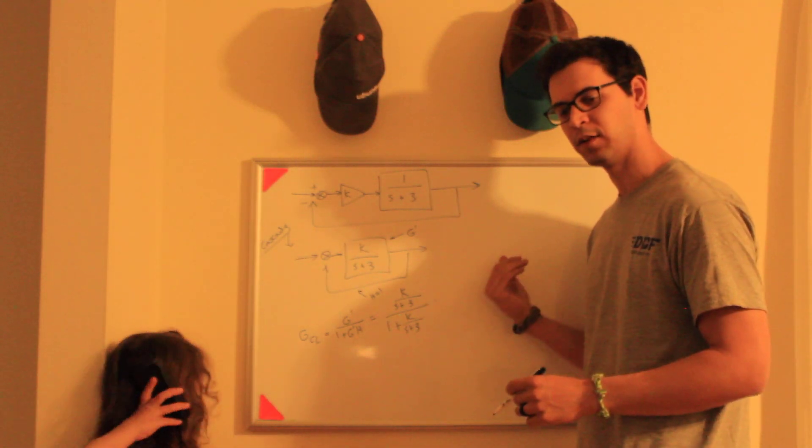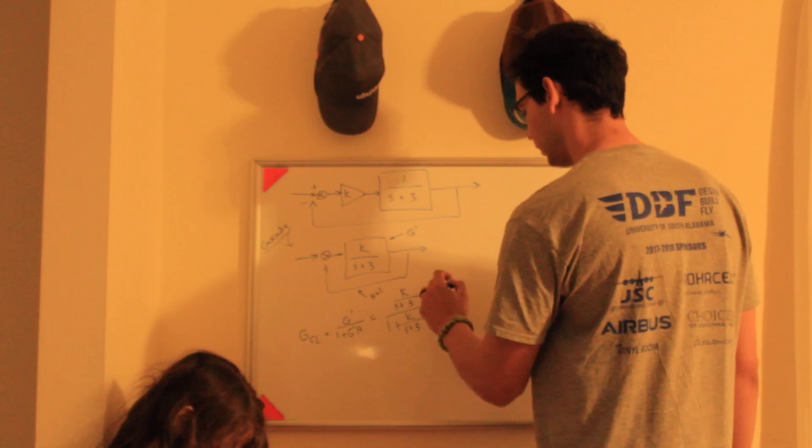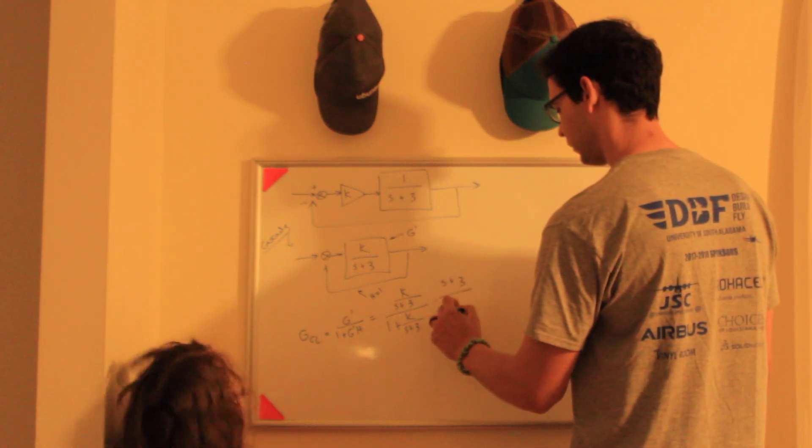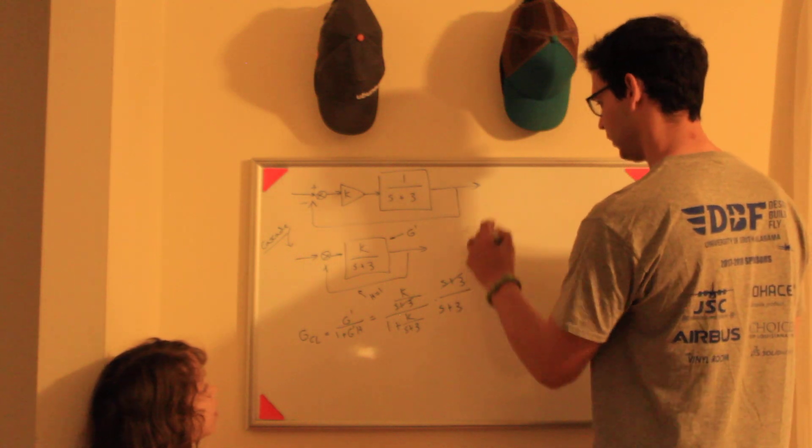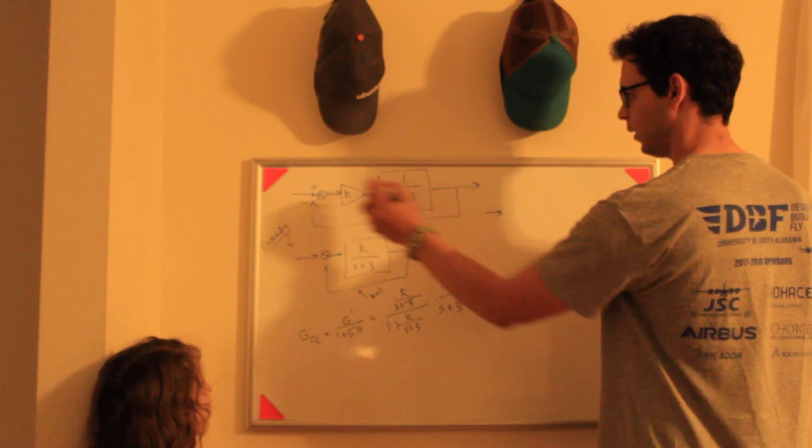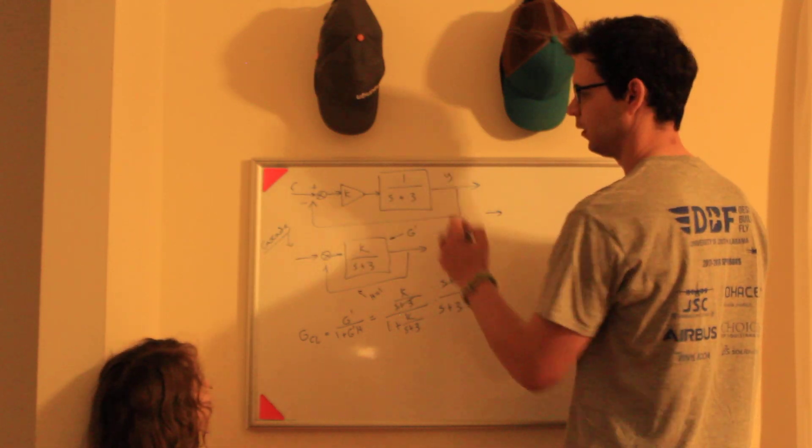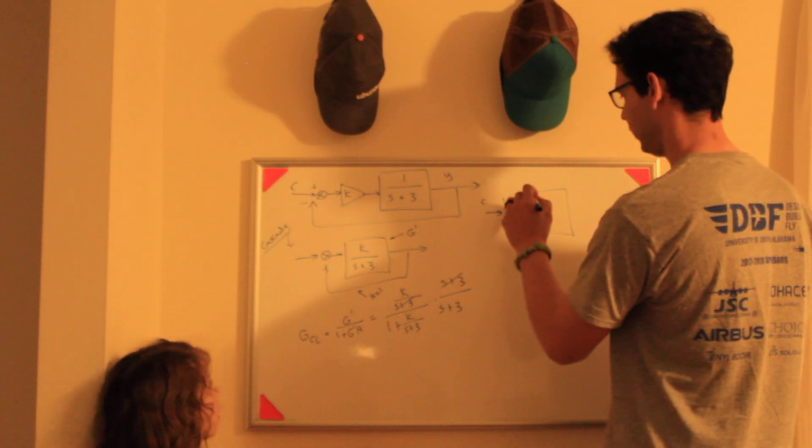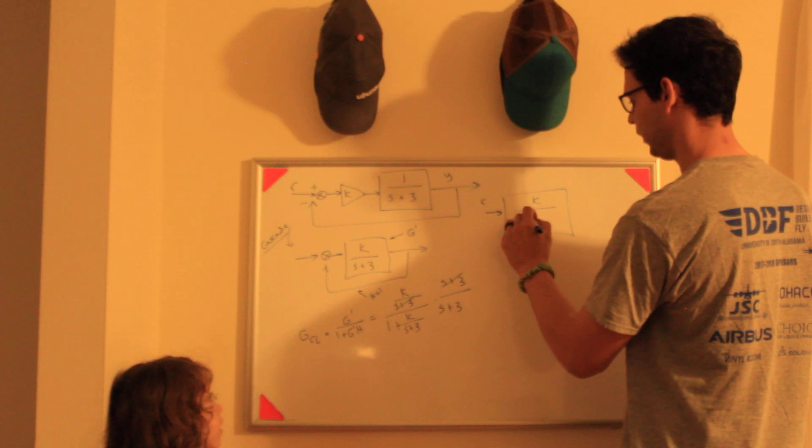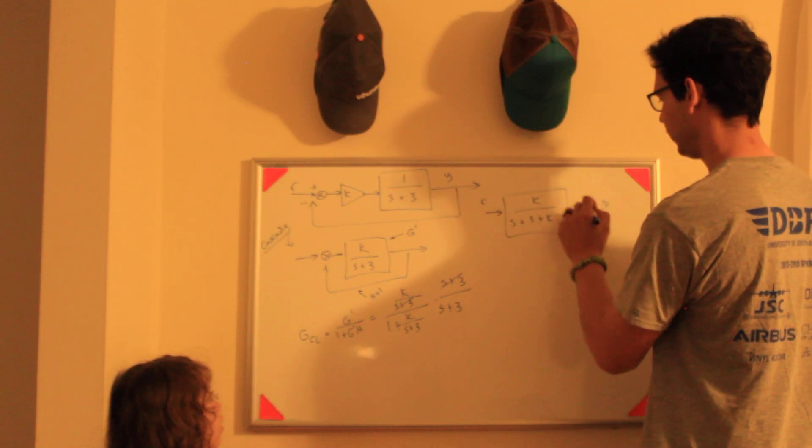You're going to multiply the top and bottom by the denominator to get rid of the improper fraction. That's going to cancel, that's going to distribute. This is the reference command and this is the output. You get K/(s+3+K).